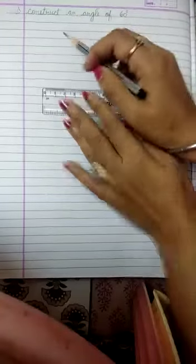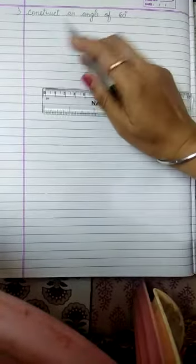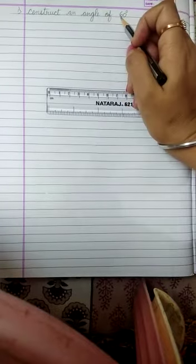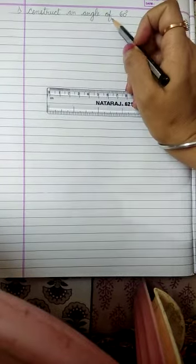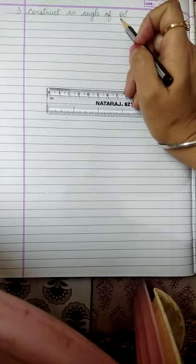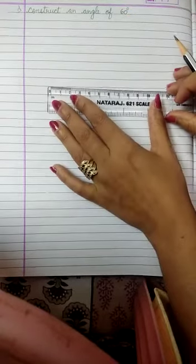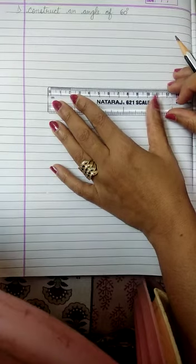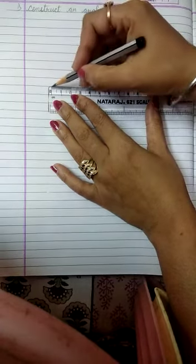Good morning students, today we are doing constructions. Construct an angle of 60 degrees. This angle 60 degrees you have already drawn in third standard, so let us start once again, recapitulation of construction of angle of 60 degrees. First of all, draw a ray.